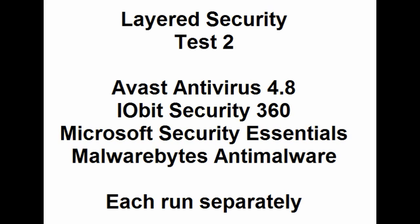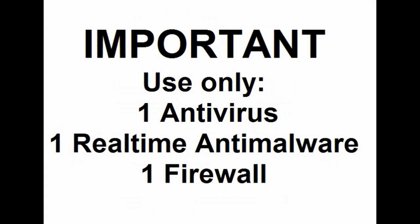It's very important that you use only one antivirus, one real-time anti-malware, and one firewall. If you have Malwarebytes anti-malware Pro or Super Anti-Spyware Pro and other such programs, you will find that they will conflict with Microsoft Security Essentials and iobit Security 360 because they all operate in real time and will cause major problems. You can have secondary anti-malware programs that run on demand.